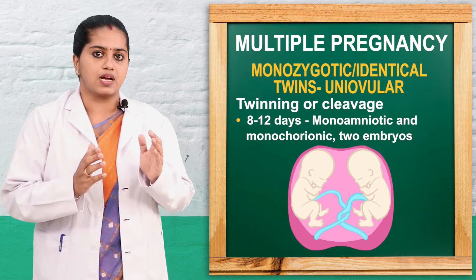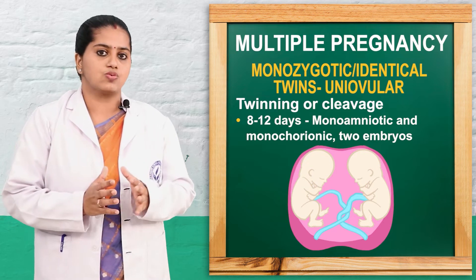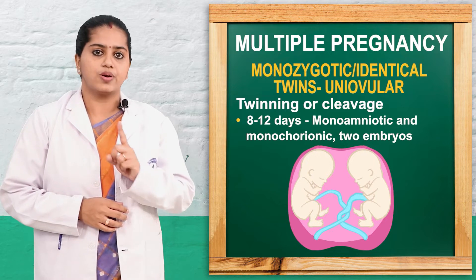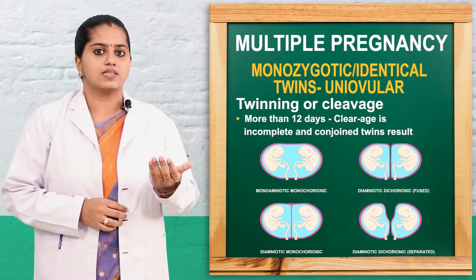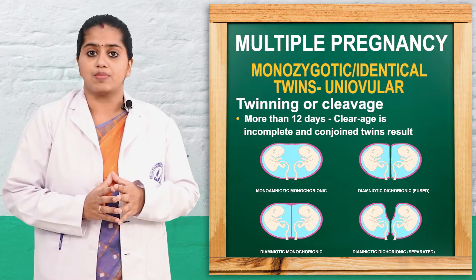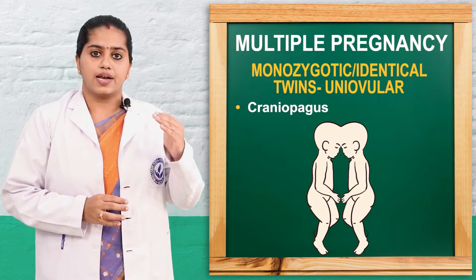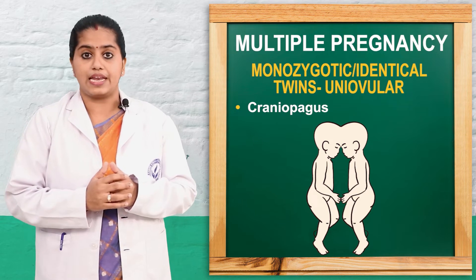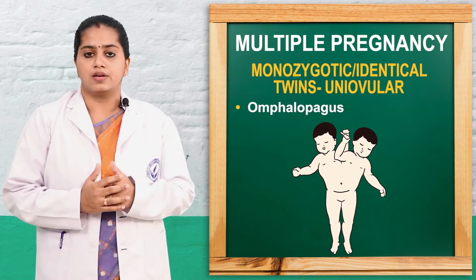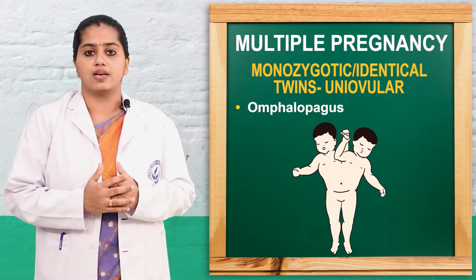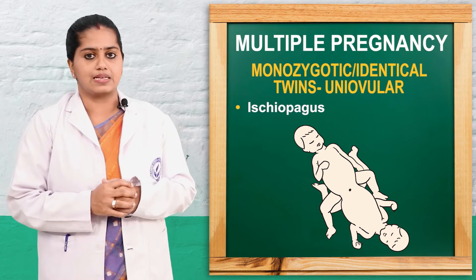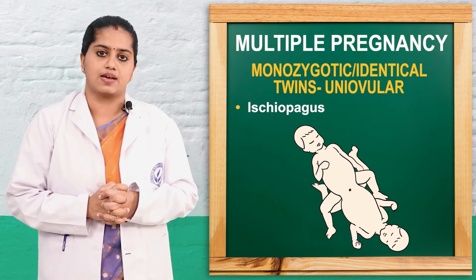If twinning takes place within 12 days, they go with monoamniotic monochorionic — 1 amnion, 1 chorion. If it takes place more than 12 weeks, then they go with having Siamese, that is conjoined twins. Head to head joining is called craniopagus, chest to chest is thoracopagus, abdominal joining is omphalopagus, and ischiopagus — like these different types of conjoined twins exist.